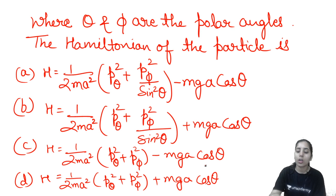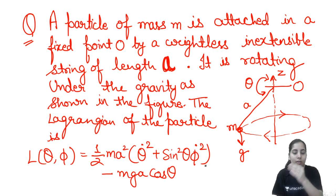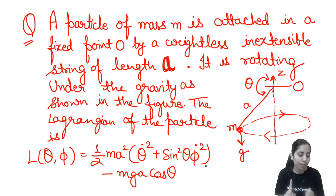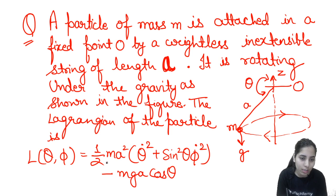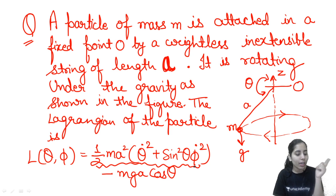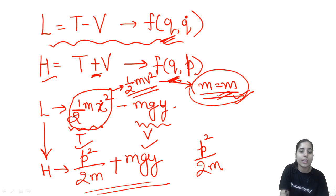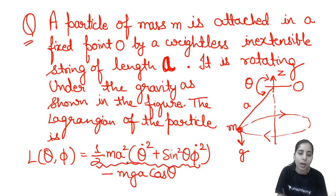Now write the Hamiltonian. For each velocity coordinate, write p²/2M: corresponding to θ̇, write p_θ²/(2ma²); corresponding to φ̇, write p_φ²/(2ma²sin²θ). Then add the potential energy +mga cosθ. Since H = T + V, taking 1/(2ma²) common gives p_θ² + p_φ²/sin²θ, divided by 2ma², plus mga cosθ. This matches option B.